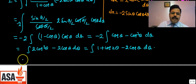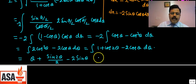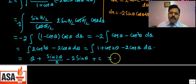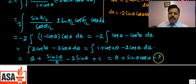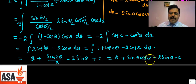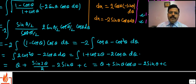Integrating: ∫1 dθ = θ, ∫cos 2θ dθ = sin 2θ/2, and ∫cos θ dθ = sin θ. Writing sin 2θ = 2sinθ cosθ, the 2's cancel, yielding sin θ cos θ − 2sinθ + c as the integrated expression.